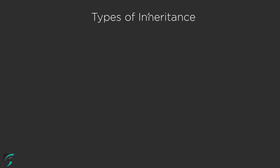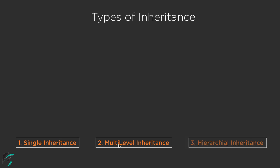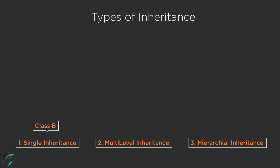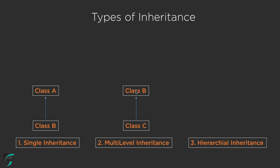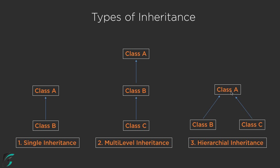Let us now check out the types of inheritance supported in case of Kotlin. The types of inheritance are the same as that of Java. We have single inheritance, multilevel inheritance, and also hierarchical inheritance. In case of single inheritance, class B simply inherits from class A. In case of multilevel inheritance, class C inherits from class B, which inherits from class A. In case of hierarchical inheritance, both class B and class C inherit from class A — which is the same example we saw with Dog, Cat, and Animal. And at the top in each case we have class A, which inherits from the Any class.